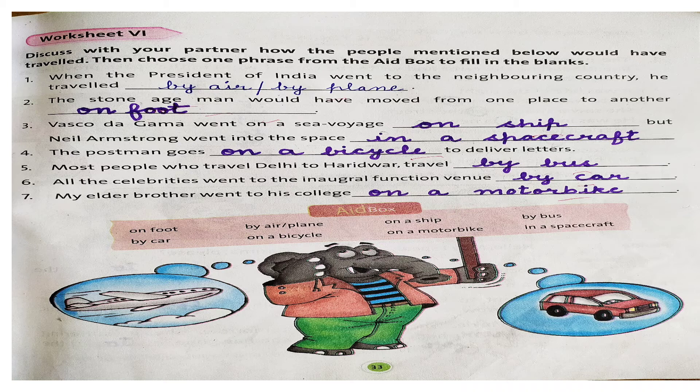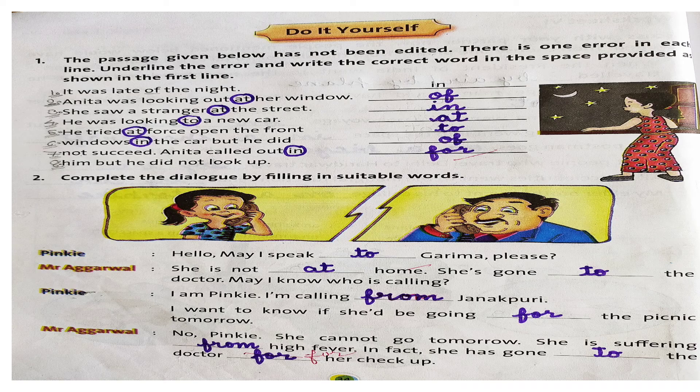Now next worksheet jo hai, that is Do It Yourself. Is mein humay jo first question hai — what we have to do is, humay jo bhi yeh sentences diya hai, humay jo error hai, jo mistake hai, usko encircle karna hai, aur jo saamne space diya hai, us mein humay correct word ko likhna hai, right? Toh sabse pehle first one is given — it was late of the night. Late in the night — humne padha hua hai, yeh hote hai aapke long periods, lamba samay jo hote hai, us mein hum in ka istimal karte hai, right?